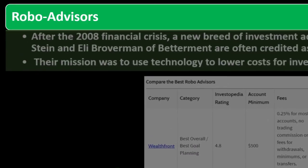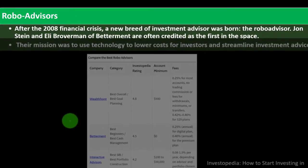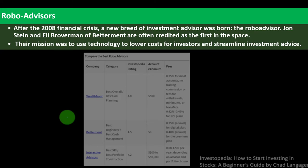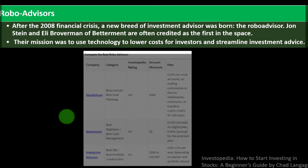Robo advisors: after the 2008 financial crisis, a new breed of investment advisor was born. Jon Stein and Eli Broverman of Betterment are often credited as the first in the space. Their mission was to use technology to lower costs for investors and streamline investment advice.